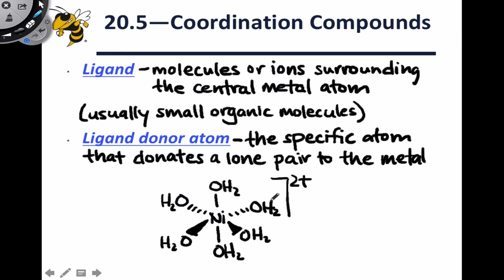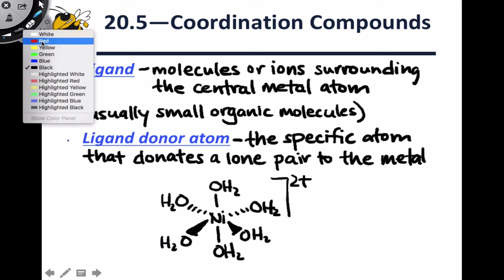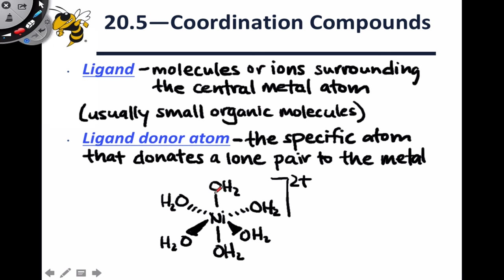So for example, in the nickel-2-hexa-aquo complex that we looked at previously, the oxygen atom is what's actually donating a lone pair to the metal. So if we were to draw out the lone pairs explicitly, one of the oxygen lone pairs is actually not involved in coordinate covalent bonding, while the other is. And you should notice that we've kind of turned some of the water molecules around so that the ligand donor atom is drawn as directly bonded to the metal. This helps us clarify which atom within the ligand is actually bound to the metal.